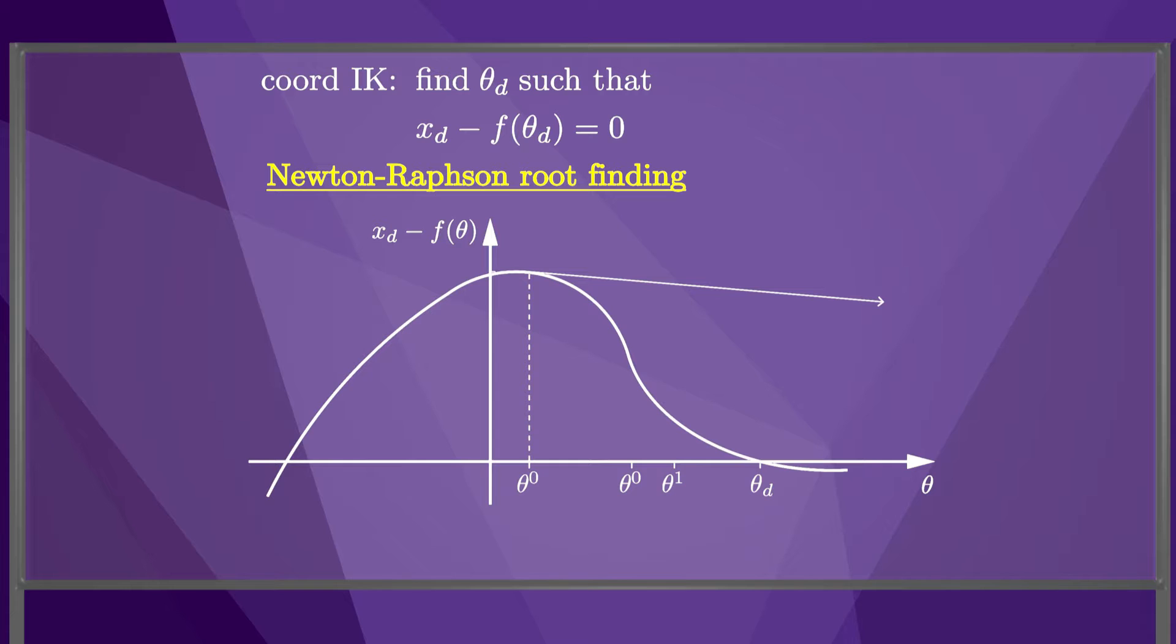If the initial guess were near the top of the plateau, the calculated slope would have been small and the next iteration would be far away, where it may be difficult to converge to a solution.